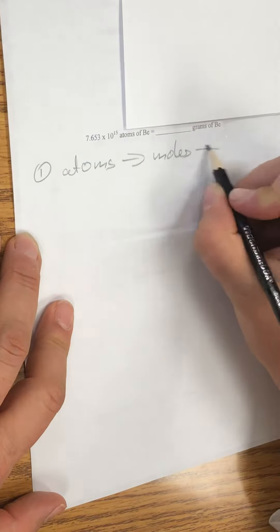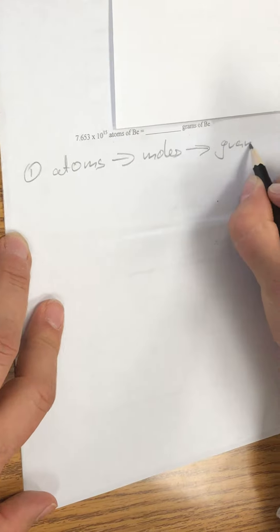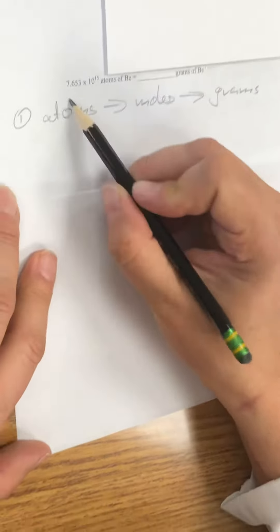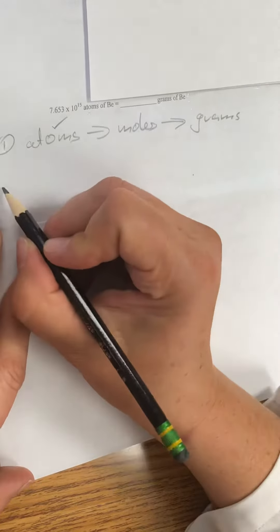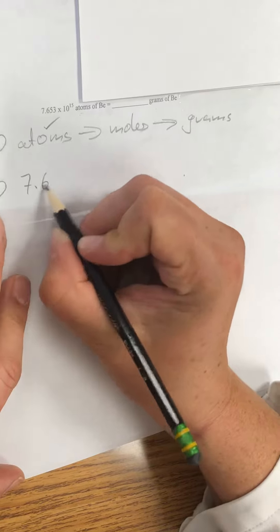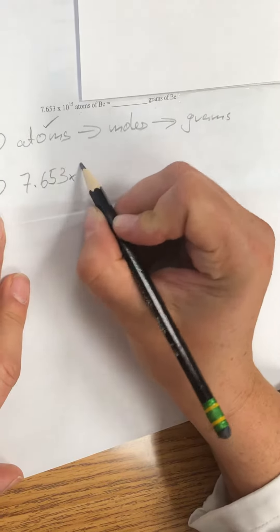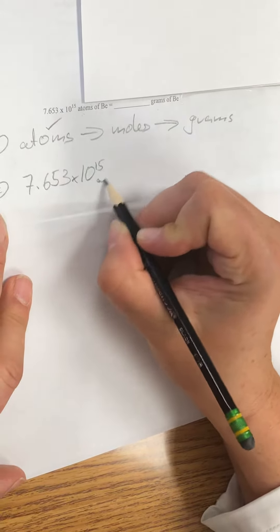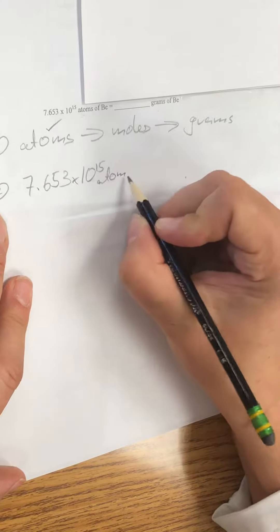And then moles to grams. So we are starting with atoms, we are already here. We have for the dimensional analysis part 7.653 times 10 to the 15 atoms of beryllium.